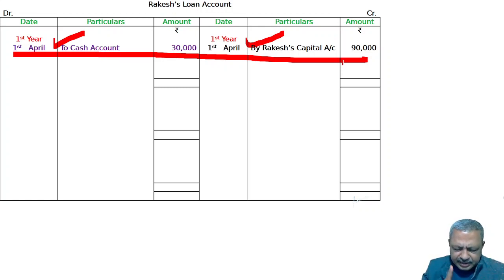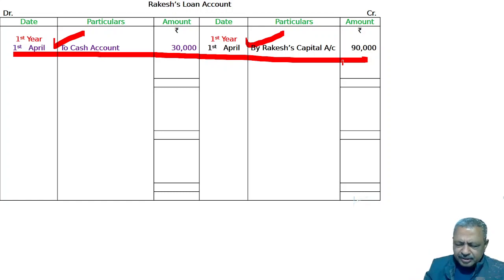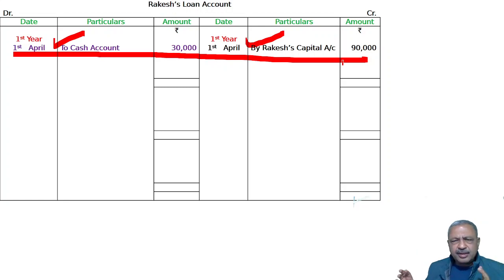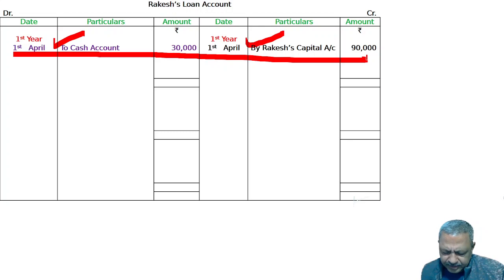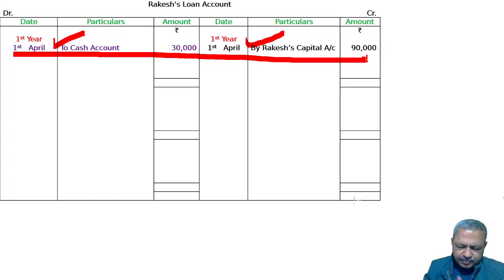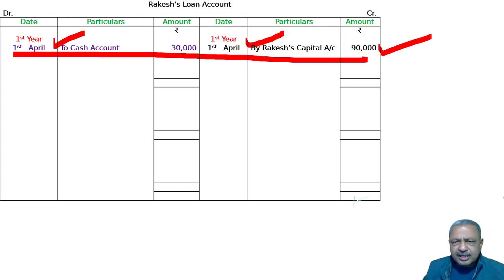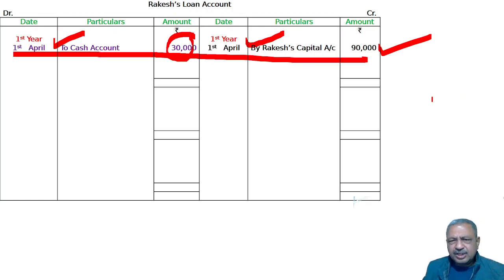And the balance is to be paid in three yearly instalments, with the first two instalments being 26,000 each, including interest. The balance amount is paid at the last instalment. Interest is payable at the rate of 10%. So 90,000 minus 30,000 equals 60,000 remaining.